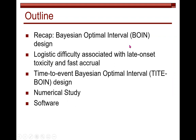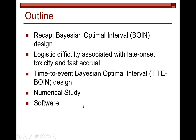I will first recap what is the Bayesian Optimal Interval Design, and then we will see what kind of logistical difficulty is associated with late-onset toxicity and also fast accrual. Then we will introduce the Time-to-Event BOIN design. Some numerical studies will be demonstrated to show the properties of this design, and I will show how to implement this design in the Shiny app software.